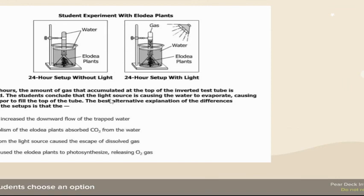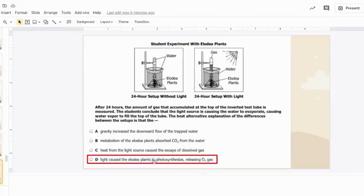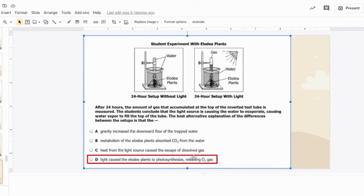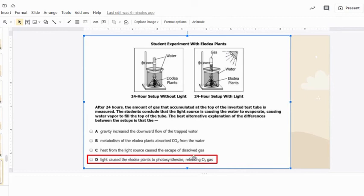For this experiment, the best alternative explanation of the differences between the setups is that light caused the Elodea plants to photosynthesize, releasing gas. One setup has light and one doesn't; one has gas and one doesn't. The correct answer addresses both the oxygen gas and the light. Options A and B are not good. C and D both address light and gas, but light helps plants photosynthesize, producing oxygen gas.